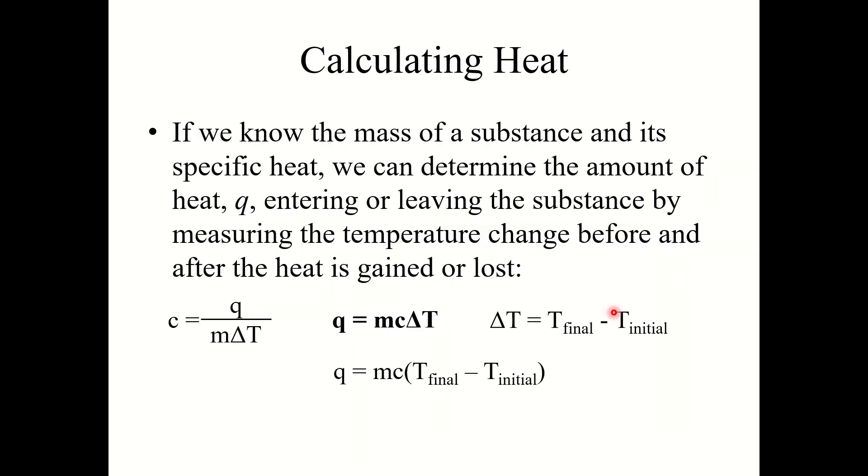All right, let's talk about how we calculate heat. Now if we know the mass of a substance and its specific heat, we can determine the amount of heat q that enters or leaves that substance by measuring the temperature change before and after that process. So if you remember our equation for specific heat, little c equals q over m delta t. If we take that equation and solve it for q, we get m times c times delta t.